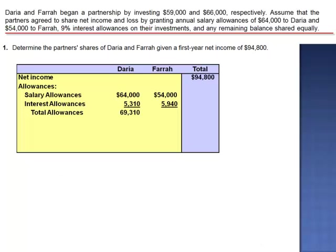Total allowances come to $69,310 for Daria and $59,940 for Farah. You can see that the use of allowances gives recognition to the varying degrees of investments of both time and assets. Presumably, Daria is investing more valuable time, and Farah has invested more assets. Total allowances come to $129,250.